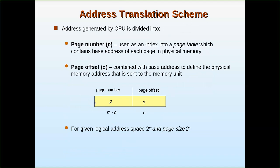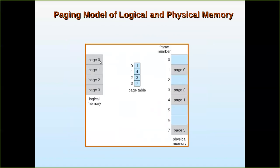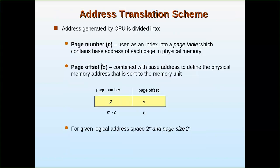The address translation scheme divides the address generated by the CPU into two fields: the page number and the page offset. The page number is used as an index into the page table. For example, in page zero there are 512 bytes — the zeroth line, second line, third line, fourth line — that position within the page is called the offset. The page number indexes into the page table which contains the base address of each page in main memory.